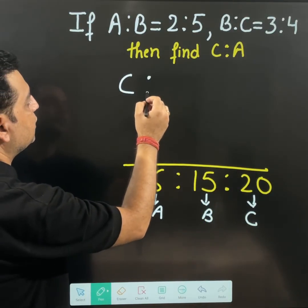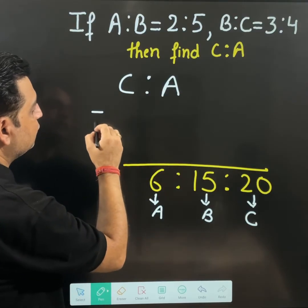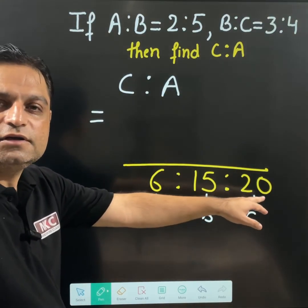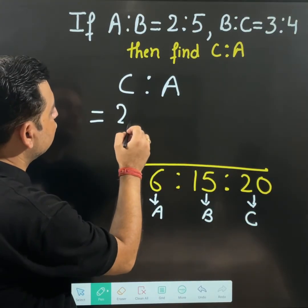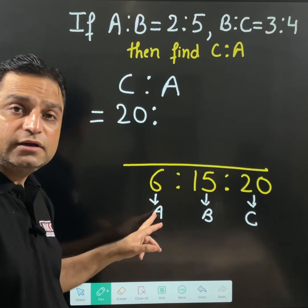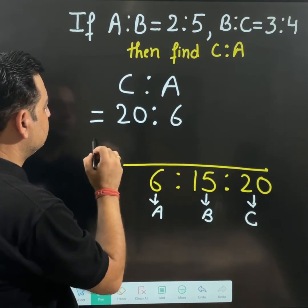C ratio A. What is the value of C I am having? C is 20. So take 20 here. And what is the value of A? It is 6. That's it.